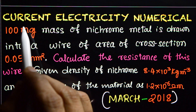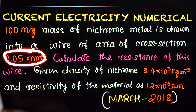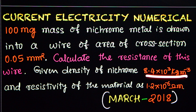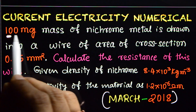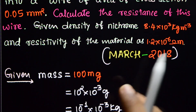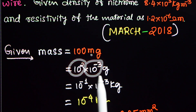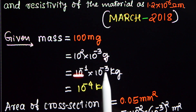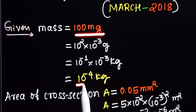We are given the mass of the metal, the cross section area of the wire, its density, and resistivity. We need to write these given values in SI units first. The mass is 100 mg. 100 means 10 raised to 2, and milli means 10 raised to minus 3, giving 10 raised to minus 1 gram. To convert grams to kg, multiply by 10 raised to minus 3. So 100 mg is 10 raised to minus 4 kg.